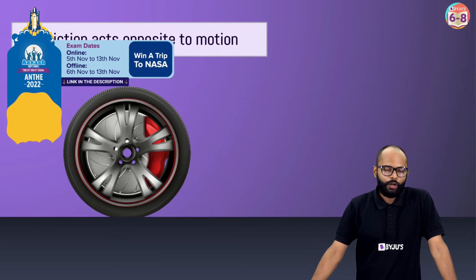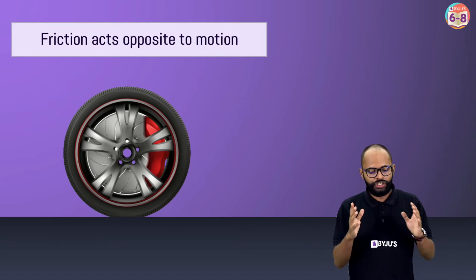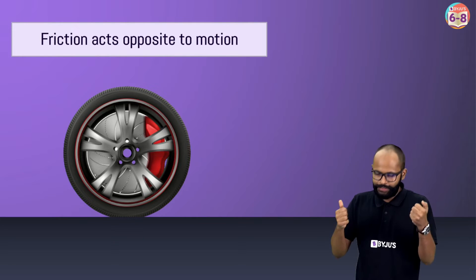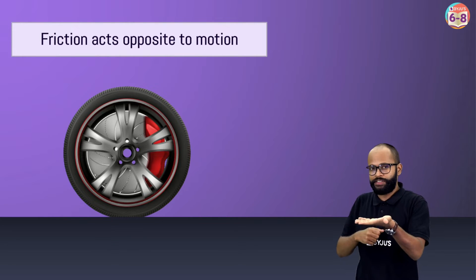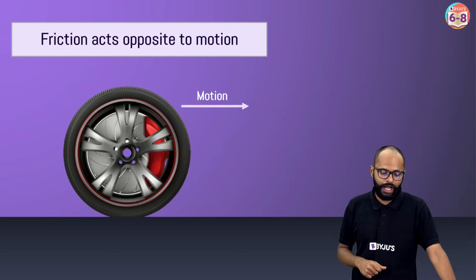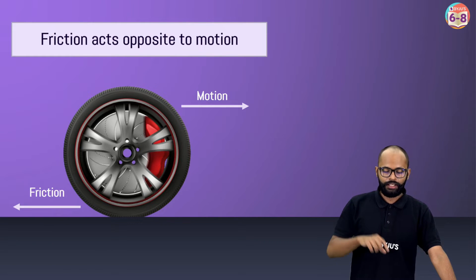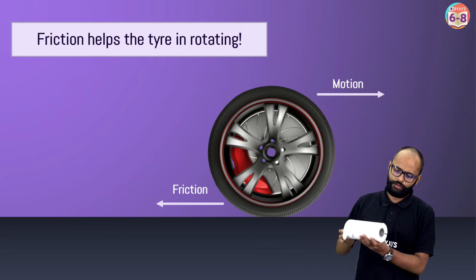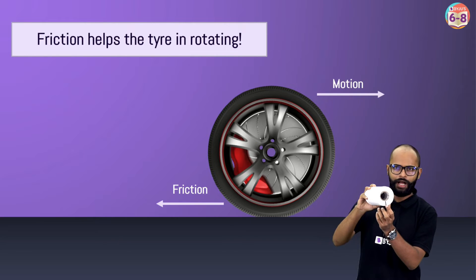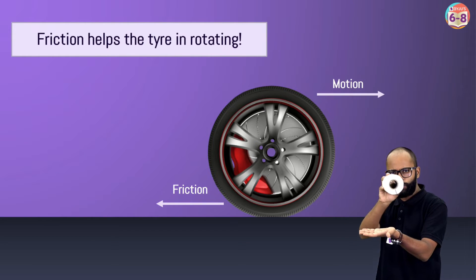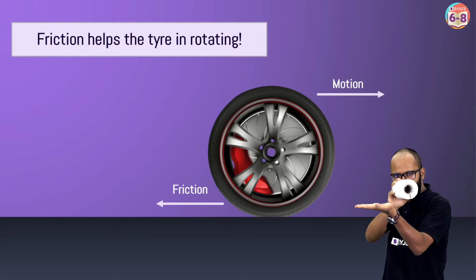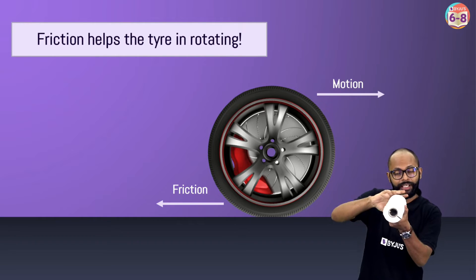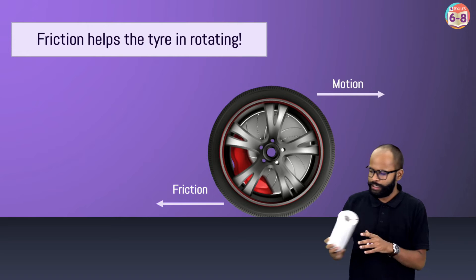How is the tire even working? Friction acts opposite to motion — the tire wants to move, but it is in contact with the surface, and the surface applies friction making the tire rotate. Look at this tissue paper roll — see this black mark. Without friction it would just go straight, but when it is in contact with the surface it will turn. That's how friction makes the tire rotate.